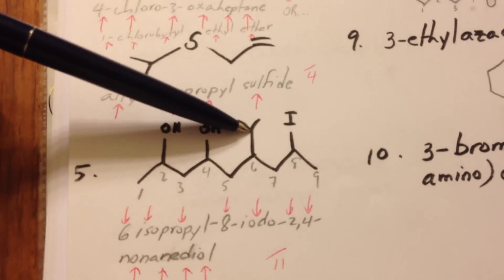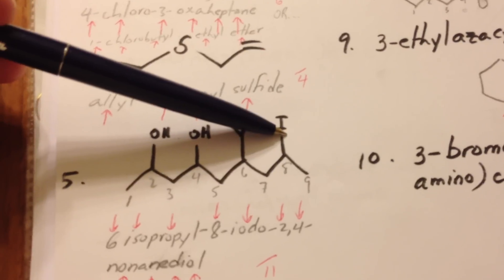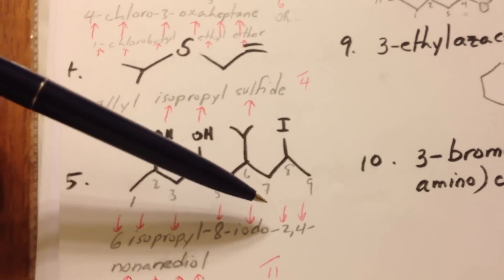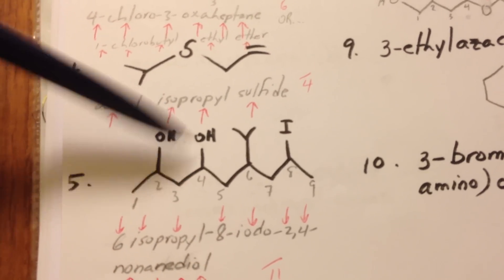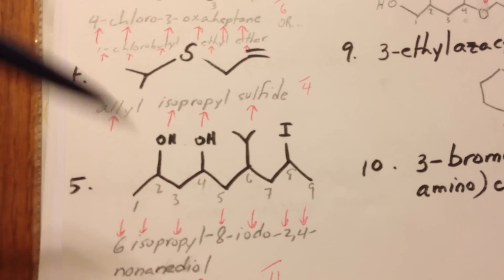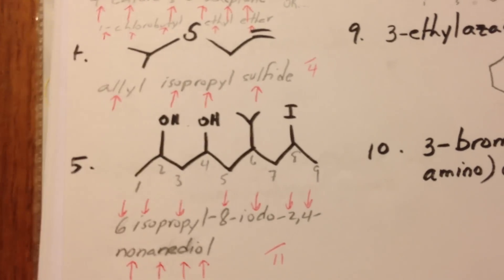So this is 6-isopropyl-8-iodo-2,4-nonanediol. That was worth 11 marks.